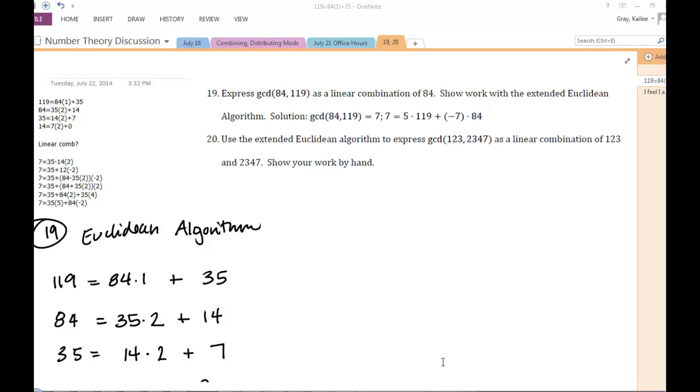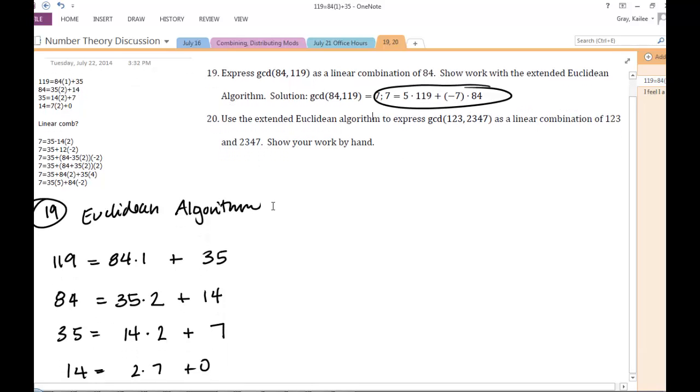I had a question come in about number 19, and the task is to write out 7 as a linear combination of 84 and 119. So we've got these inputs of 84 and 119, and it looks like a lot of people are doing pretty well with the Euclidean algorithm to find that GCD. So I went ahead and just completed that process and I'm going to work with that from there.